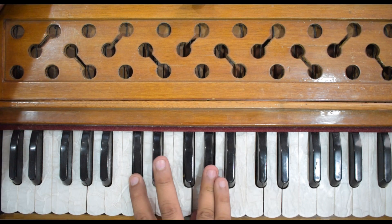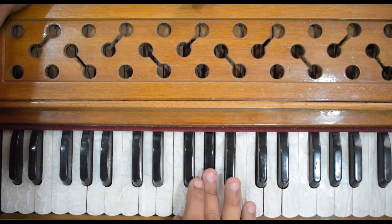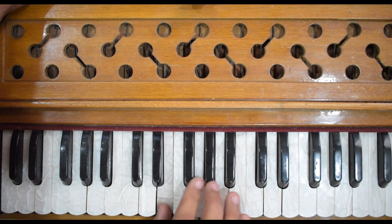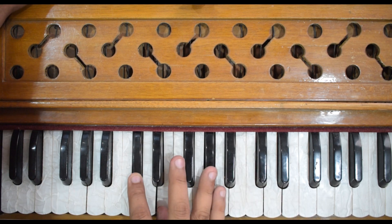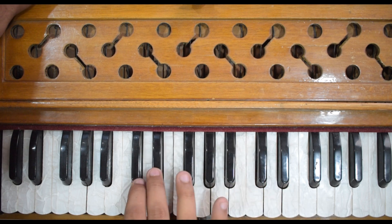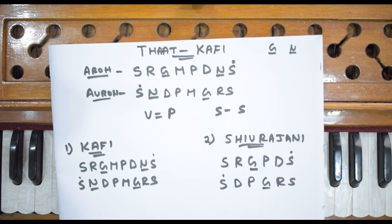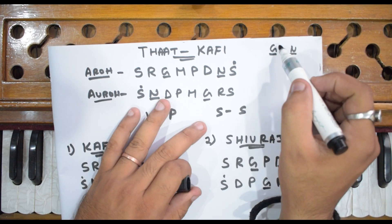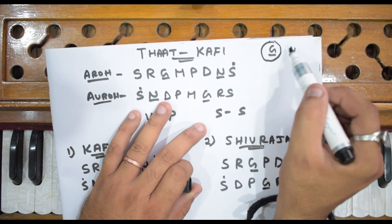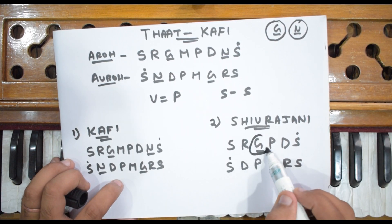Aroha: Sa, Re, Ga, Pa, Dha, Sa. Avaroha: Sa, Dha, Pa, Ga, Re, Sa. As I mentioned in the beginning, this Thaat has Ga Komal and Ni Komal as its special characteristics. In Shivranjani, Komal Ga is also used, which makes it related to this Thaat.